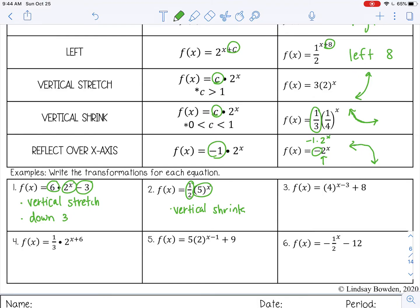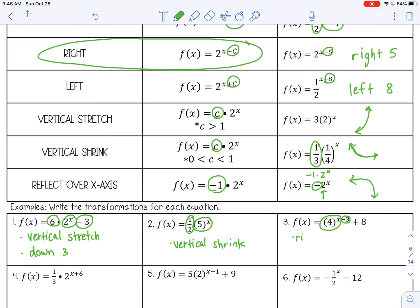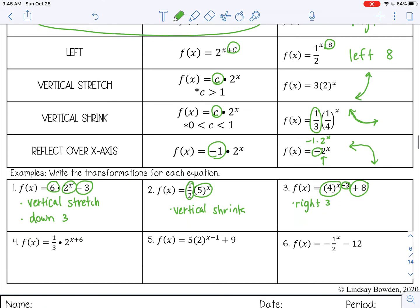Number 3. We have 4 to the x power. This is our growth function. We've subtracted 3 from the exponent of x. So that's going to be here. When you subtract from the exponent, that moves it right 3. And then we've added 8 to the very end. That moves it up 8.